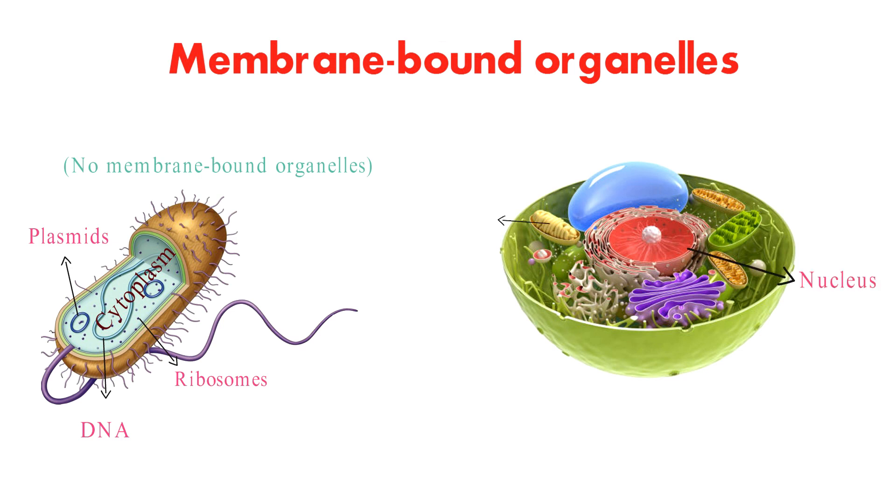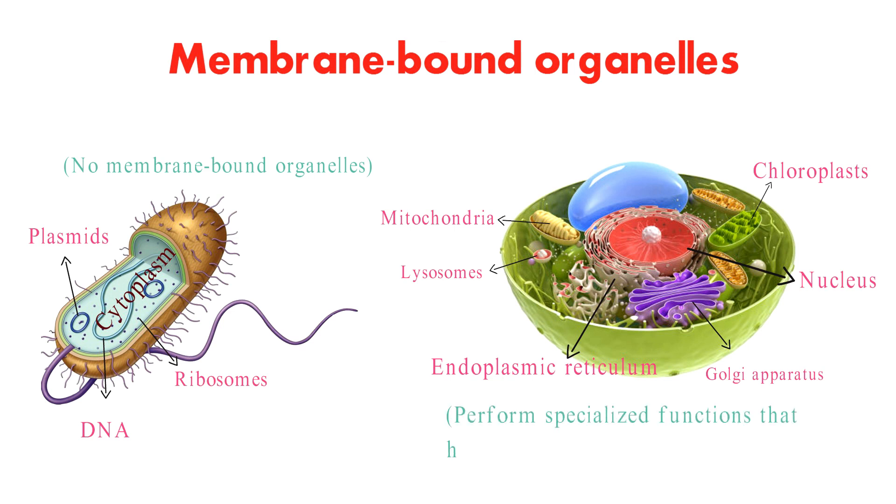Eukaryotic cells have many membrane-bound organelles, including the nucleus, mitochondria, chloroplasts, endoplasmic reticulum, Golgi apparatus, and lysosomes. These organelles perform specialized functions that help the cell to survive and function.